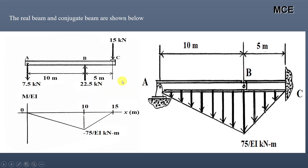After this, draw the conjugate beam for the real beam. At point A we have a pin support. At point B we have an internal pin or roller. And C is a free end. In the conjugate beam, support A remains a pin. Support B, since it is an internal pin, its conjugate support is an internal hinge — so replace the internal pin at B with an internal hinge. At support C, since it is a free end, its conjugate support is fixed. So ABC is the conjugate beam, and you load it with the M/EI diagram.